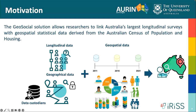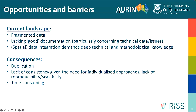The current landscape: we have fragmented data, no good infrastructure, everyone is doing similar things in isolation, there's no good documentation — people just write their own scripts. The consequence is a lot of duplication of work. Researchers in Australia are doing the same work independently, which is how we are losing a lot of productivity by repeating the same things all the time, and it's very time-consuming.